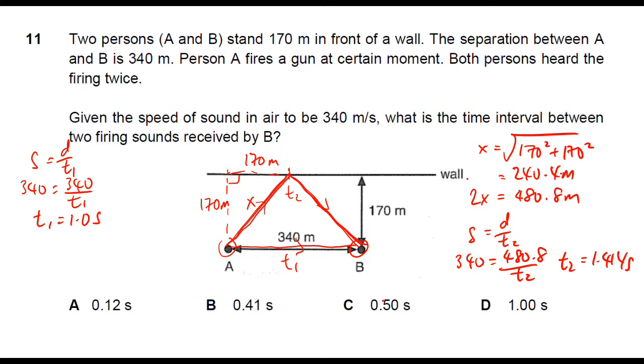So to find the time interval, you just need to do T2 minus T1, 1.414 minus 1 second. Therefore, the answer will be 0.414 seconds. So the answer is B.